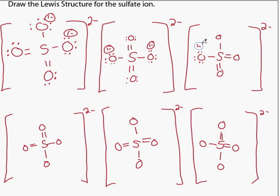Singly bonded oxygens with three unshared pairs have a formal charge of minus one. Doubly bonded oxygens have two unshared pairs and no formal charge.